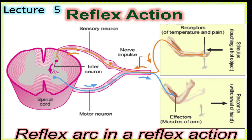First of all, what is our central nervous system? The central nervous system sends signals to our muscles and glands. There are two types of actions: one is voluntary actions, controlled by the somatic nervous system, and one is involuntary actions, controlled by the autonomic nervous system.